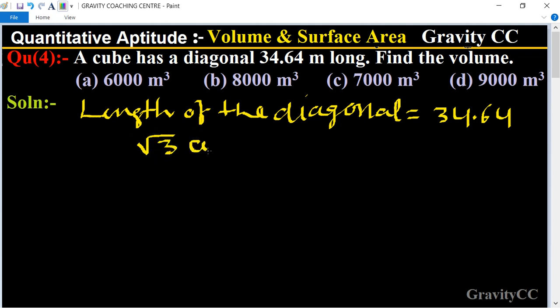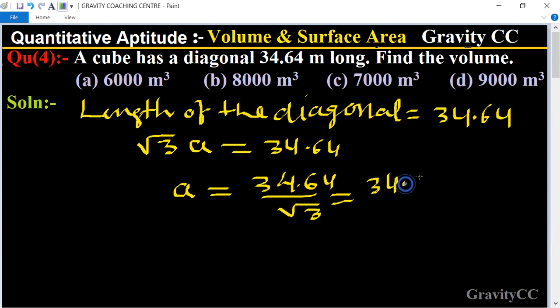So √3 × a = 34.64, then a = 34.64 ÷ √3 = 34.64 ÷...